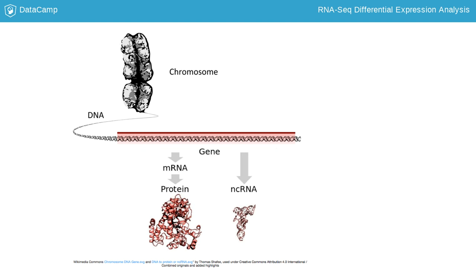Some genes encode RNA that does not get translated into protein. These RNAs are called non-coding RNAs, or ncRNAs. Often these RNAs have a function in and of themselves, and include rRNAs, tRNAs, and siRNAs, among others. All RNAs transcribed from genes are called transcripts.